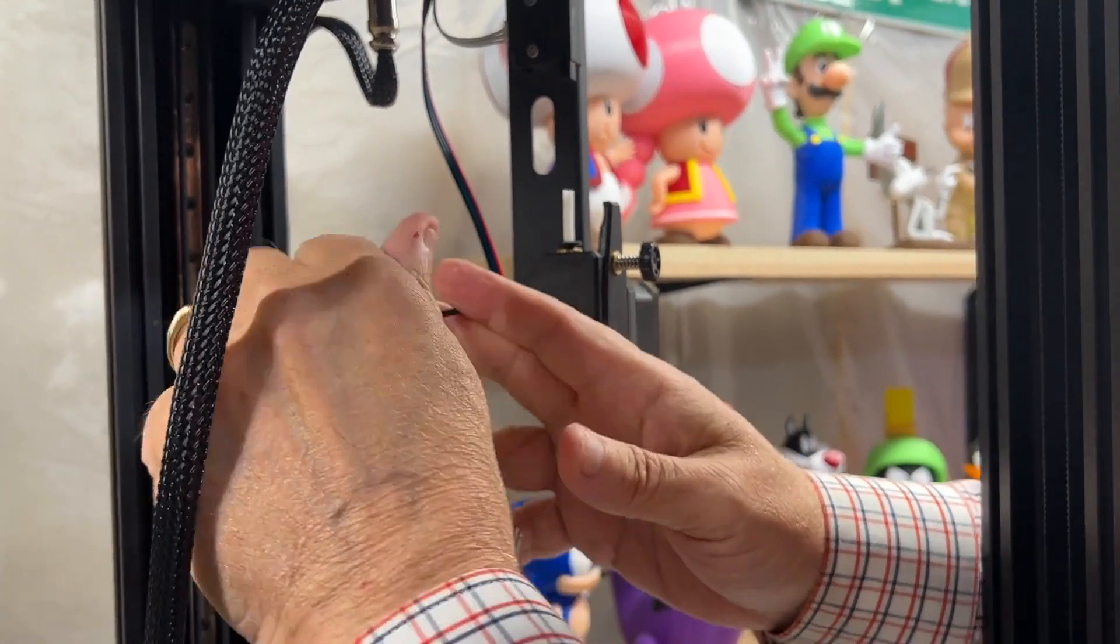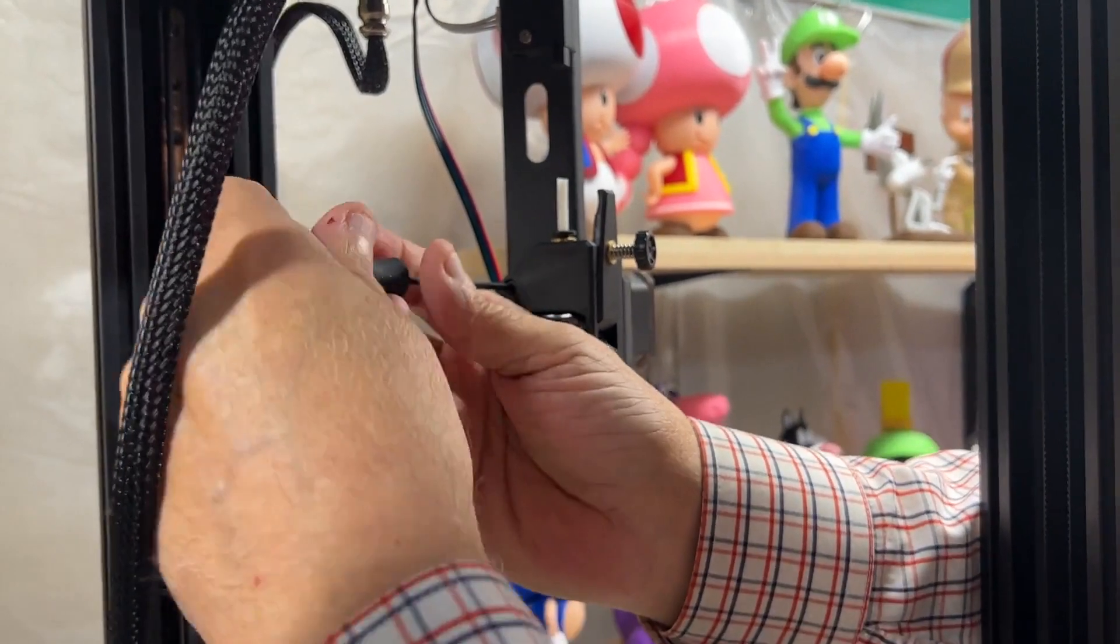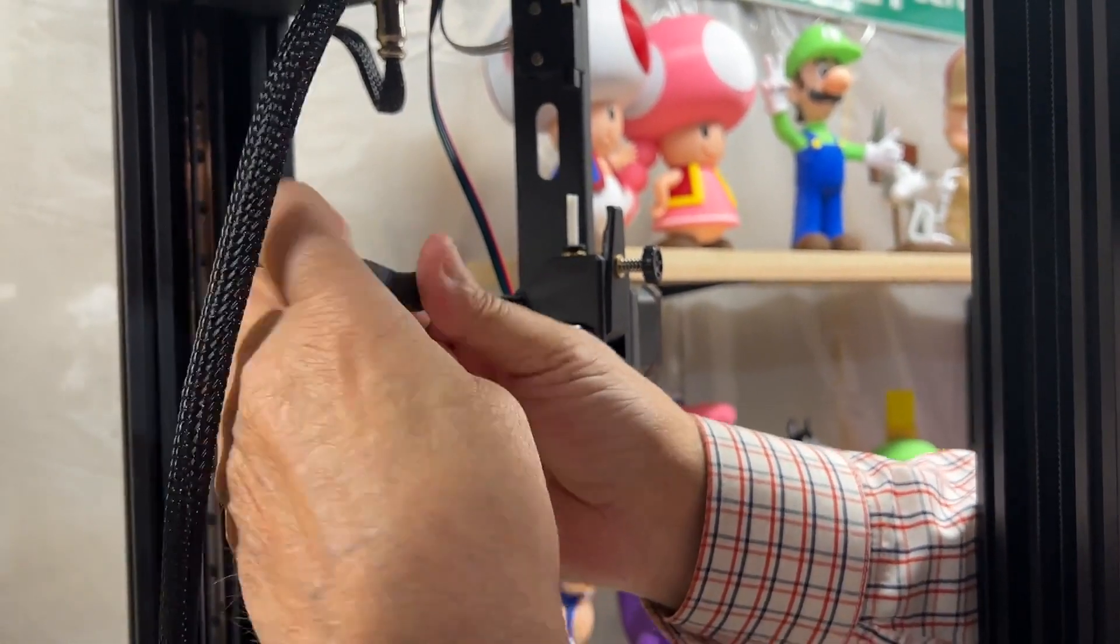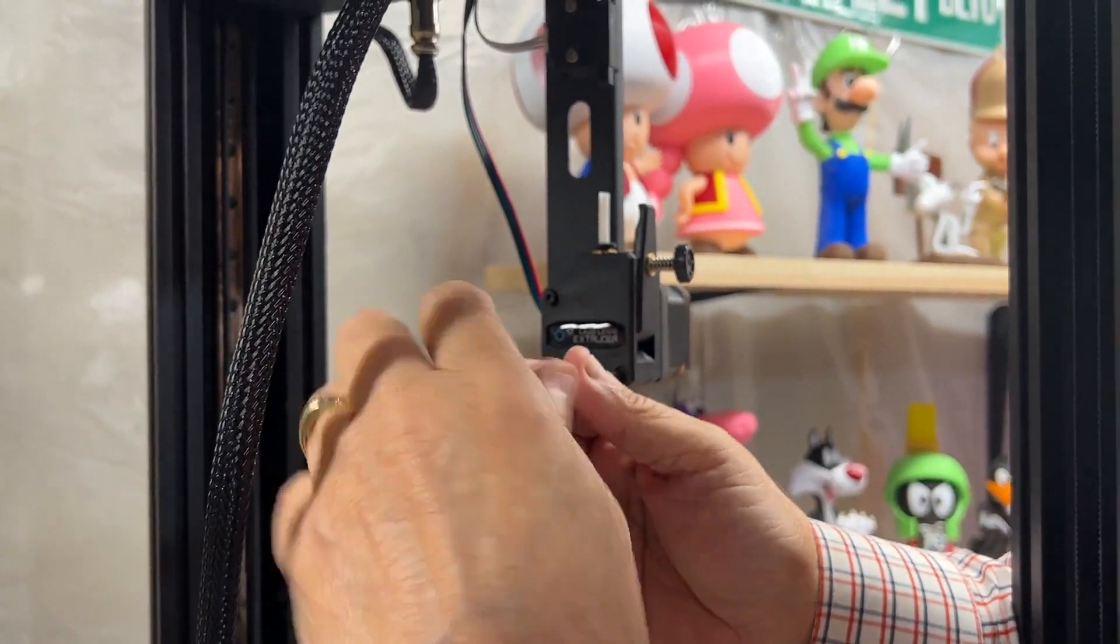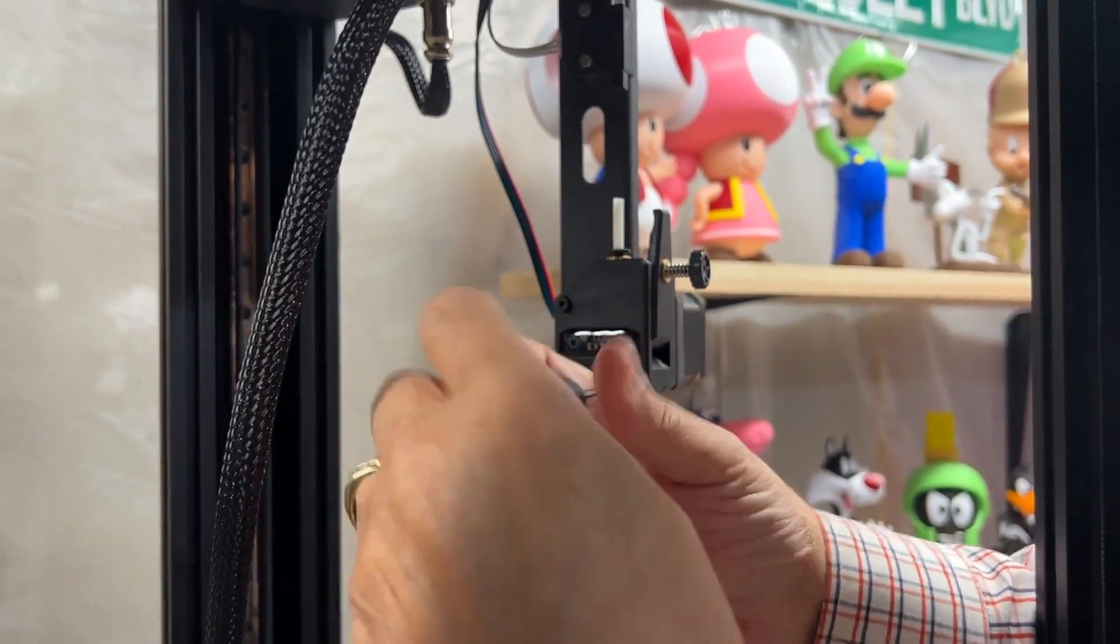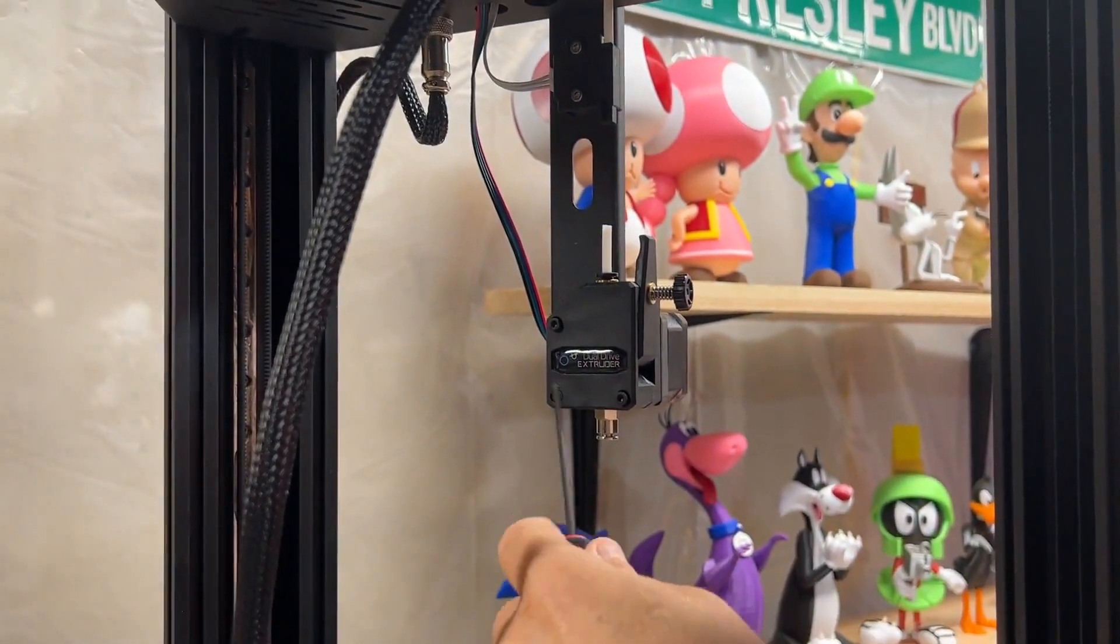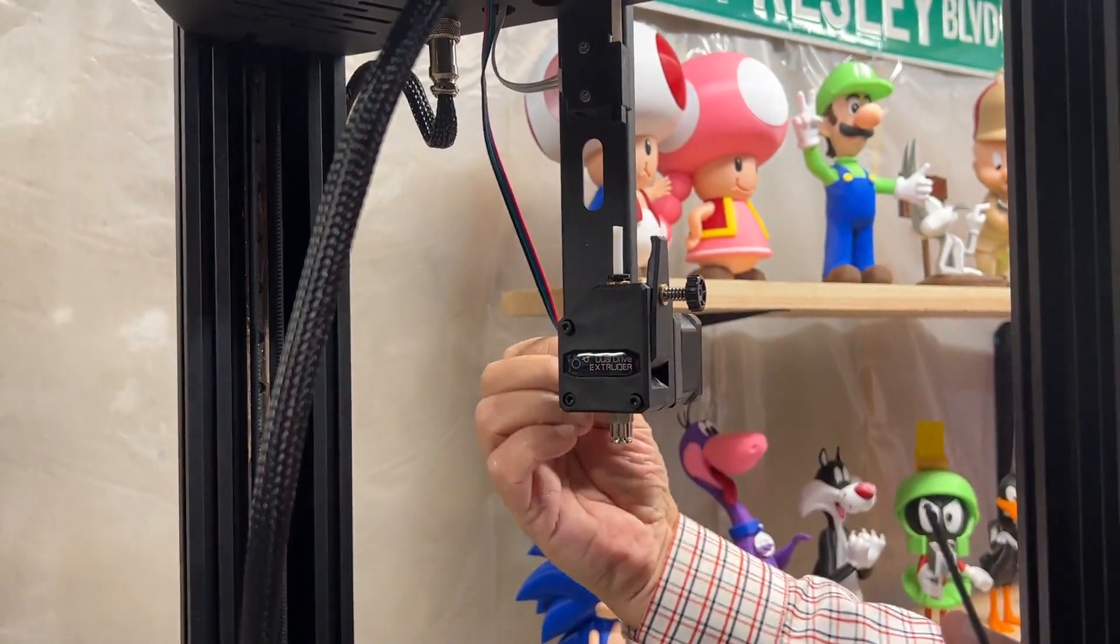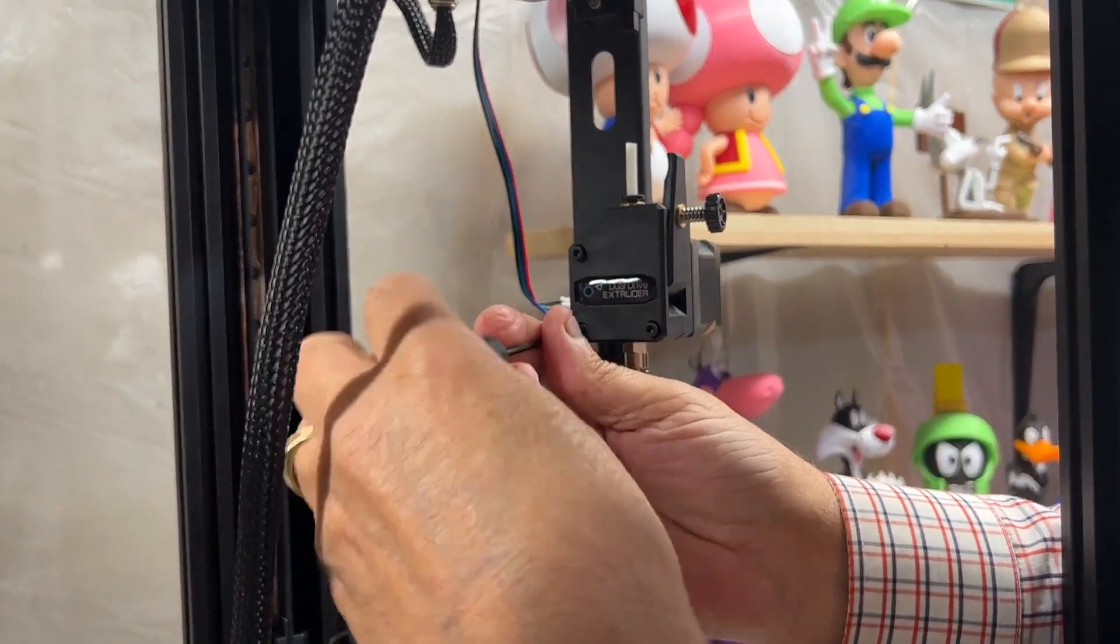Now this is very simple, it's just three screws and one wire. So we'll take the screws off first. What I do before I take the last screw off, I just unplug the wire in the back, just like that. I take the last one off.